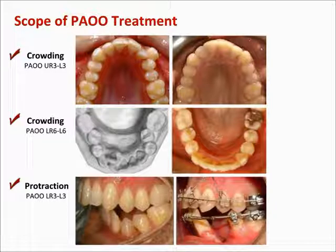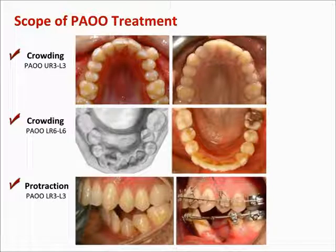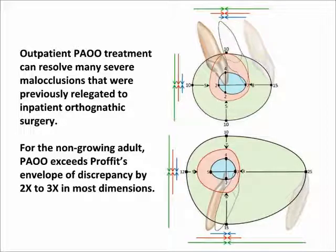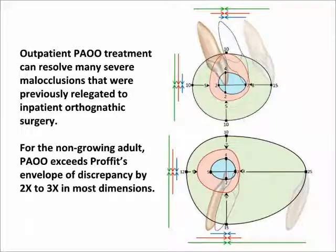PAOO is appropriate for severe problems of the alveolar housing, but is unable to resolve anterior-posterior jaw disharmonies that grossly exceed alveolar size, and therefore cannot replace orthognathic surgery. In the larger scope of patient care, outpatient PAOO therapy can resolve many borderline surgery cases that have been previously relegated to inpatient orthognathic surgery. Compared to the non-growing adult patient, the scope of treatment by PAOO exceeds Proffit's envelope of discrepancy by 2-3 times for adults receiving orthodontic treatment only. The augmentation bone grafting in PAOO therapy increases the alveolar housing, enabling an increased scope of malocclusion treatment.